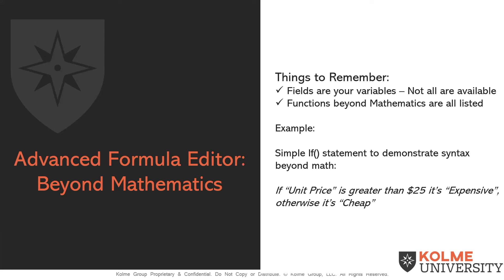But in this example, what we want to know is if the unit price is greater than $25, we want to show it as expensive. Otherwise, if it's less than $25, we want to show it as cheap.